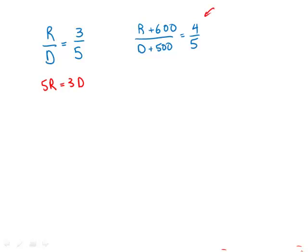Now in this second equation, I'm going to cross multiply. I get 5 times r plus 600 equals 4 times d plus 500. And I have to distribute on both sides.